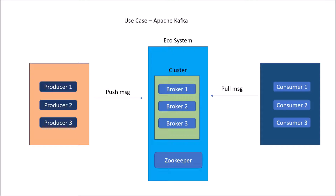How does a consumer know from which broker to consume the message? As mentioned, brokers register themselves with ZooKeeper. When a new broker comes up, it registers itself with ZooKeeper; if a broker goes down, ZooKeeper deregisters it. Before posting a message directly to a broker, the producer goes to ZooKeeper, gets the broker ID, and then posts the message to that broker. Similarly, the consumer goes to ZooKeeper, gets the broker ID, maintains the offset, and then consumes the message from that particular broker.